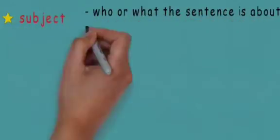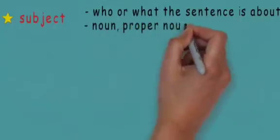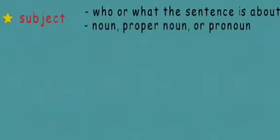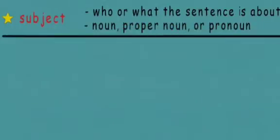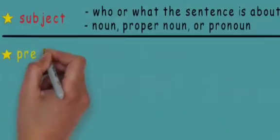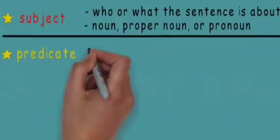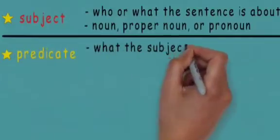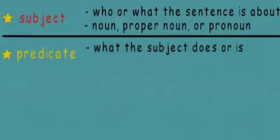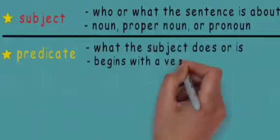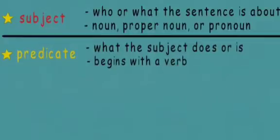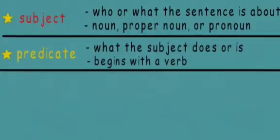So remember, subject is who or what the sentence is about. A subject could be a noun, proper noun, or pronoun. The predicate tells what the subject does or is, and it usually begins with a verb.